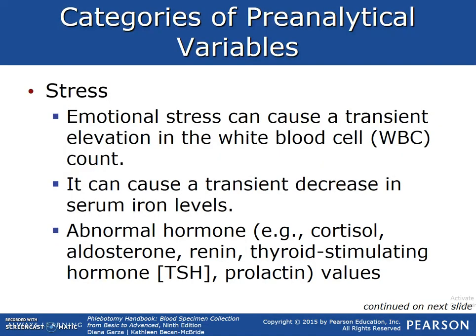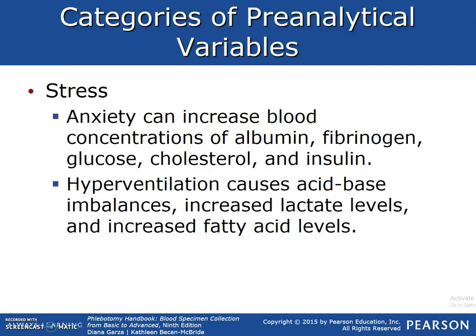Stress: emotional stress can cause a slight elevation in the white blood cell count, a transient decrease in serum iron levels, and abnormal hormone values including cortisol, aldosterone, renin, thyroid-stimulating hormone (TSH), and prolactin. We would wait to draw a patient if they were excessively crying, as this could also increase the white blood cell count. Anxiety can increase blood constituents of albumin, fibrinogen, glucose, cholesterol, and insulin. Hyperventilation causes acid-base imbalances, increased lactate levels, and increased fatty acid levels.